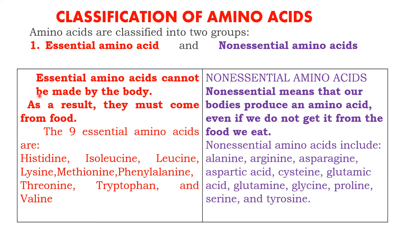Essential amino acids cannot be made or synthesized by the body. That means we have to supply them from food. The body will not synthesize these amino acids; we must supply them through food materials. Examples include histidine, isoleucine, leucine, and lysine.